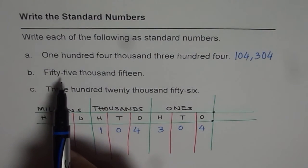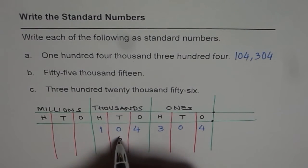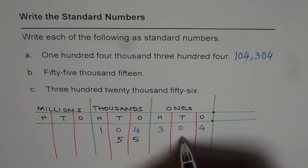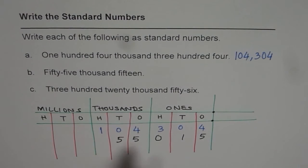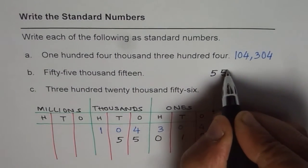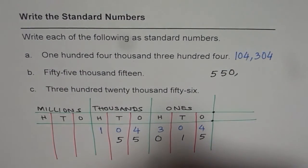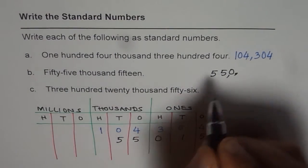B is fifty-five thousand and fifteen. In the thousands group we write fifty-five, and in the ones group we write fifteen. We have a blank space so we fill it with a zero. So the number is 55,015.